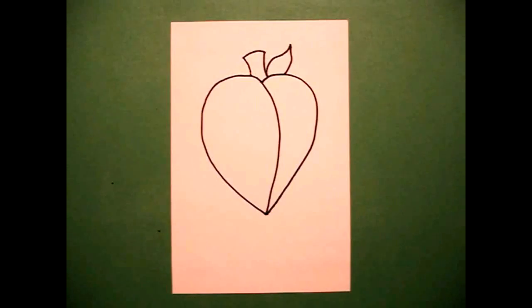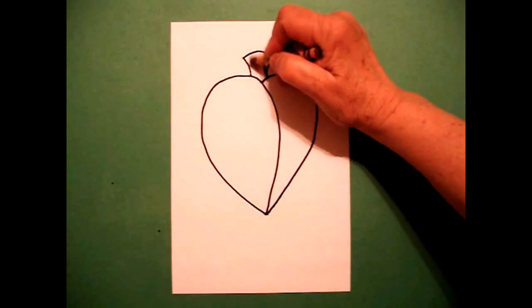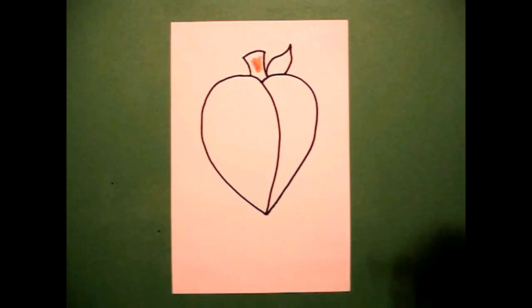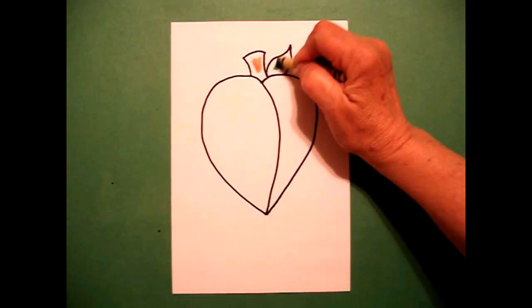And now we're ready to color. First thing I'm going to color is my stem, so I'm going to do that brown. I've got a very nice green to make my leaf pop.